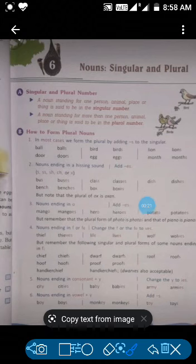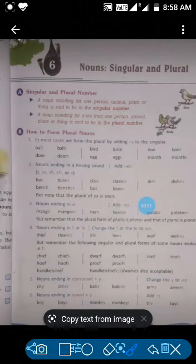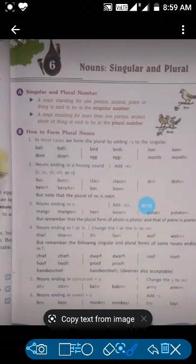A noun standing for one person, animal, place, or thing is said to be in the singular number. So you all have to know from chapter 5 what a noun is. Now we are going to know that the word used is a noun that is singular or plural number. When one person can denote it, then it is singular number. When more than one person can denote it, then it is plural number.